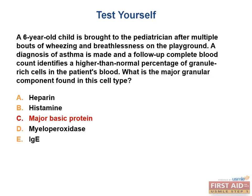The question stem gives us several clues about the cellular process being tested in this typical two-jump question — the test first wants you to identify what topic is being tested, then know something specific about that topic. The question gives you the diagnosis of asthma, and we discussed two cells involved in its pathogenesis: the mast cell and the eosinophil. The eosinophil even has asthma in its mnemonic NAACP. The question also tells us there is a higher-than-normal percentage of granulocyte-rich cells in the blood count differential. Both cells have granules, but only the eosinophil appears in the differential mnemonic — Never Let Monkeys Eat Bananas — where E stands for eosinophil. So the question is asking about the eosinophil, and the major granular component is major basic protein.